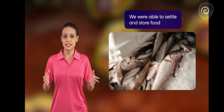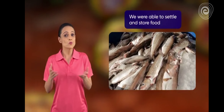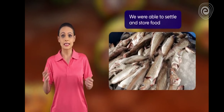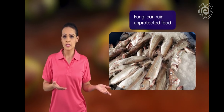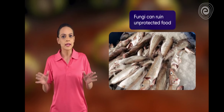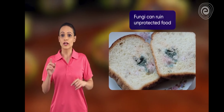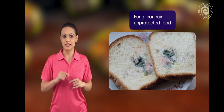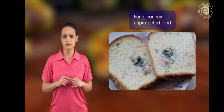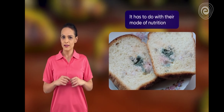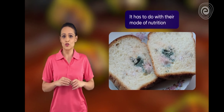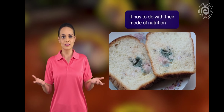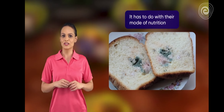Protecting food from decaying is perhaps one of the things that made civilization possible. Fungi, while useful in some ways, can become a nightmare when you try to keep bread and juice from getting spoiled. It obviously has something to do with their mode of nutrition. Keep watching to know more.